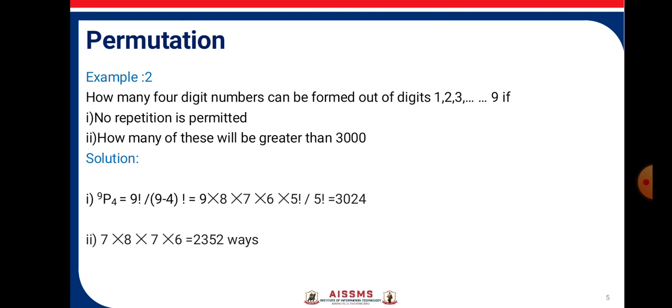The first position will be filled by 7 ways, second by 8 ways, third 7, and fourth 6. So 7×8×7×6 = 2,352 ways. We will get number greater than 3,000.